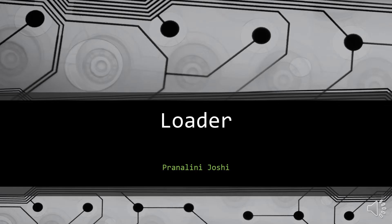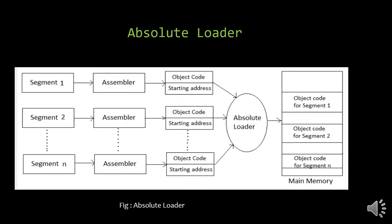In today's lecture, we will learn what is an absolute loader. In this approach, everything will be done outside the loader. All the object files will be accepted by an absolute loader and it loads them into the main memory. The advantage of the system is that retranslation is not required; one source program can have different subprograms written in different languages, and the translator of those particular languages will convert them into object files and pass them to the absolute loader.